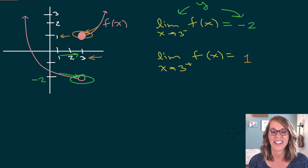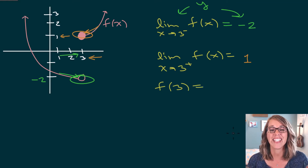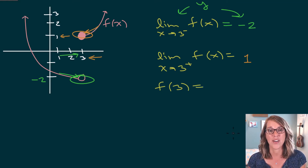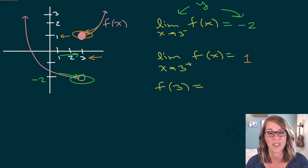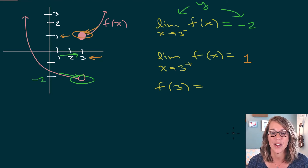Continuing to analyze what's happening at 3 — if I were to evaluate the function, this is a different question. I want to know what point exists when x equals 3. What's my y-coordinate? That answer is 1.